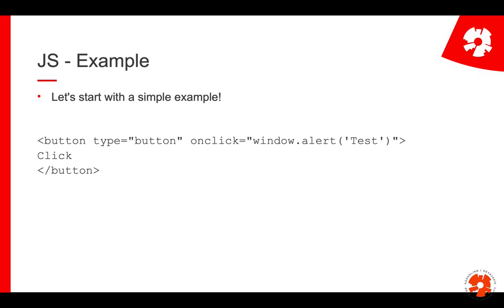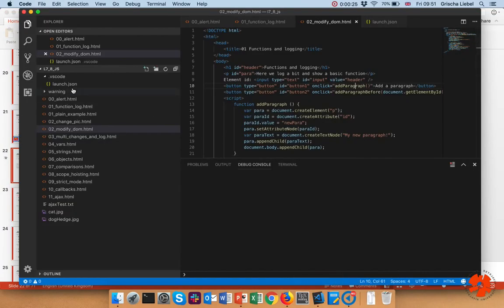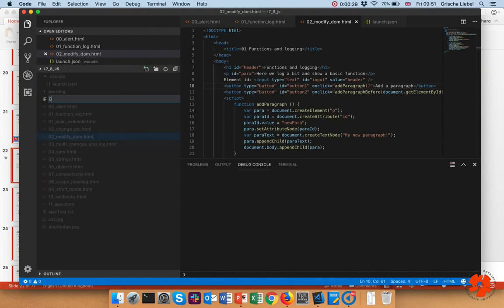Let's start writing some JavaScript. Before I explain things, I typically show you what you can do. Here we have an example where we define an HTML button with text 'click' on it. And then we define an onclick handler, so whenever we click on this button, we do window.alert('test'). So this is one way of doing JavaScript. I can just define a new file and call it 'simple example'.